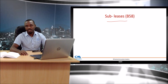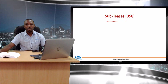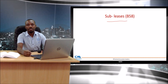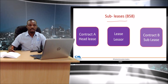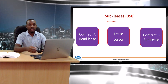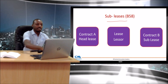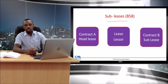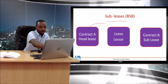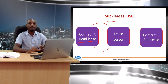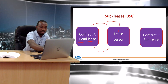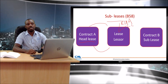What happens if you lease an asset and then sub-lease it — meaning you rent an asset and then rent it to a third party? The standard refers to the first contract as the head lease contract. For that head lease, as the lessee, you consider whether it's a short-term lease or a lease of low value. If neither, you raise a right-of-use asset and a lease liability.